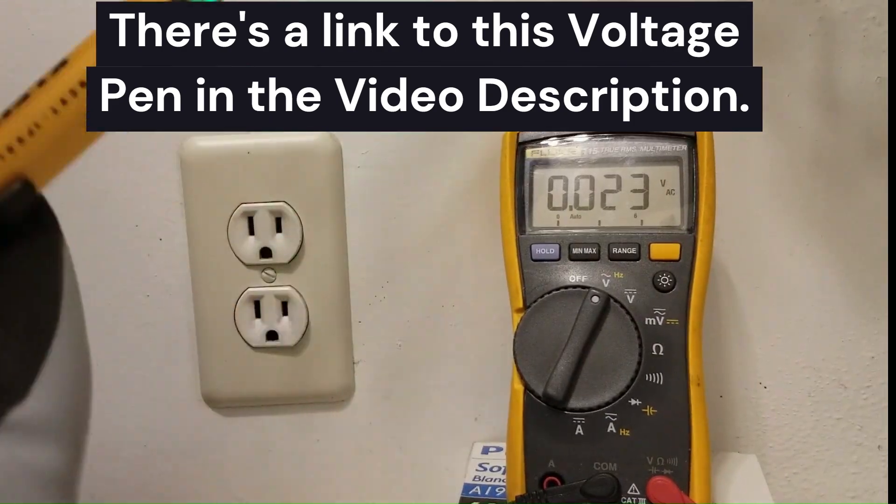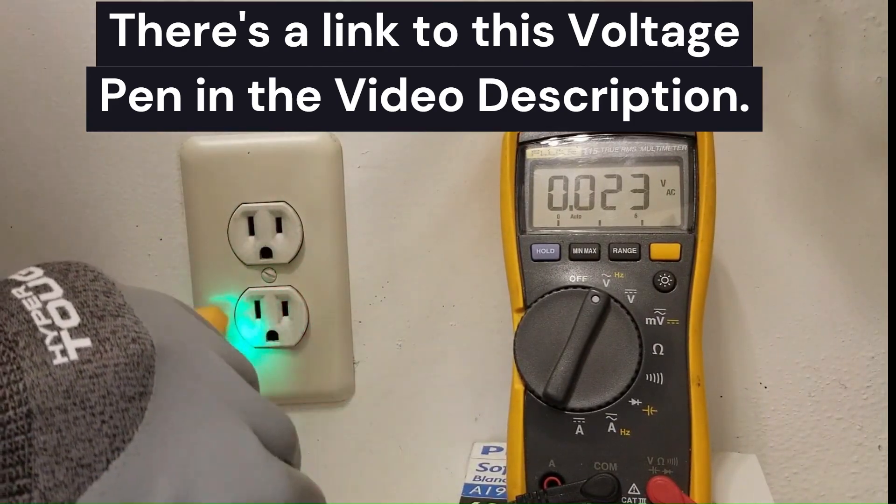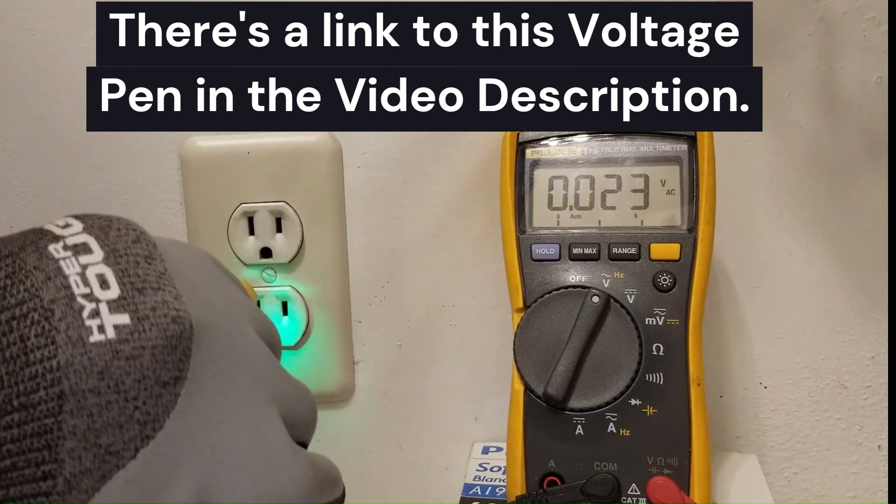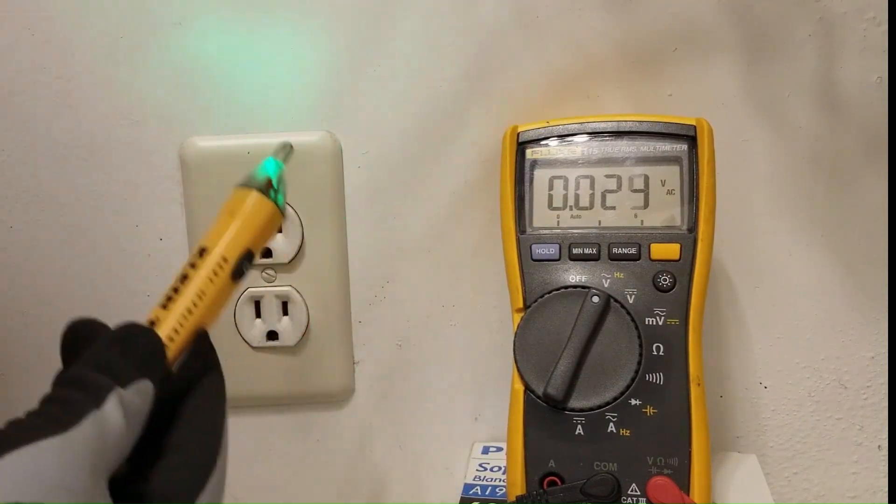So that's a really good way a voltage pen can tell you if you have a loose upstream neutral with respect to this outlet that is causing this outlet to fail under load.